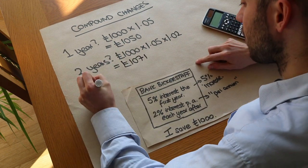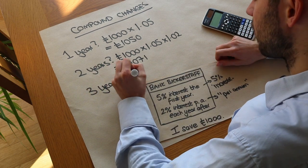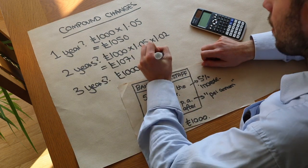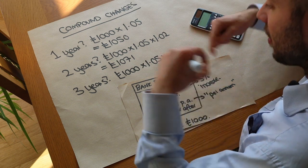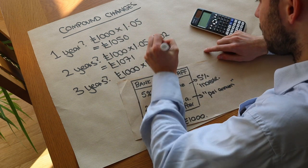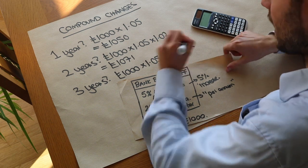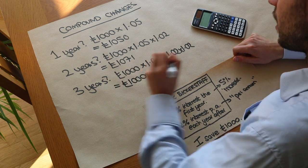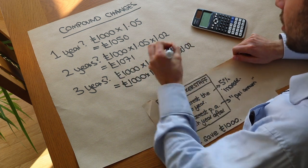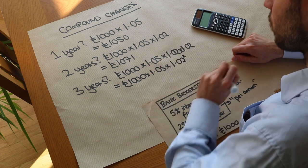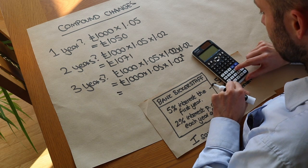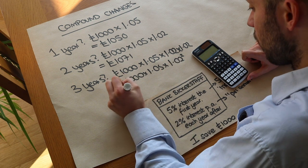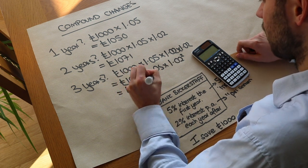What about after three years? We do a thousand pounds, multiply by 1.05 for the first year, then multiply by 1.02 for the second and third years. We can write that more concisely as a thousand times 1.05 times 1.02 squared. Putting that in the calculator gives one thousand and ninety-two pounds and forty-two pence.